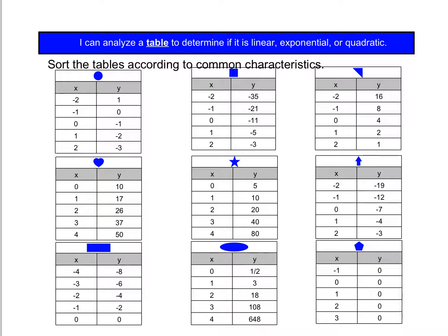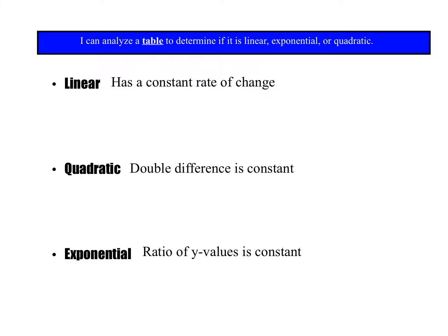Now look at these tables and see if you can sort them by common characteristics. We know that linear has a constant rate of change — that's why it's a straight line. It's going up and over the same amount every time, giving it that linear pattern.